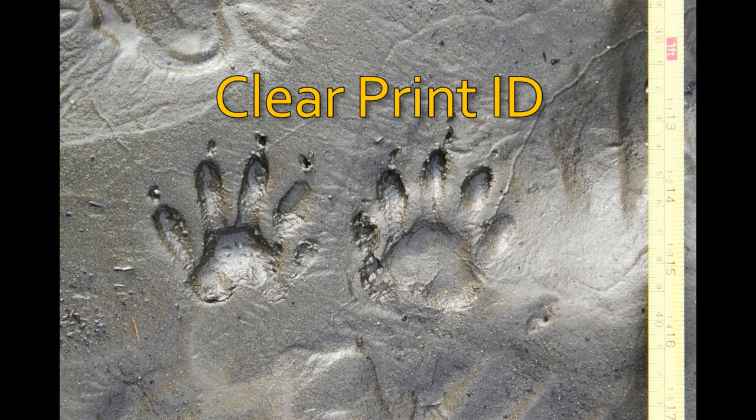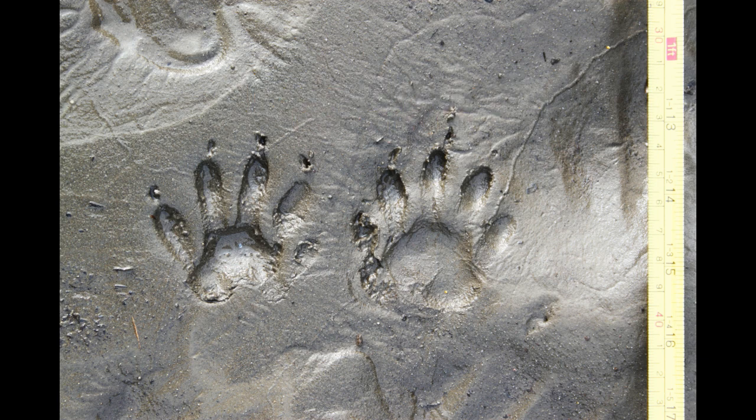Now we're on to the next step which is clear print identification — looking at the clearest, most well-defined tracks you can find and examining all their features to identify the maker of those tracks. In this case we can see two tracks both with five toes, kind of longer heels, and elongated toe pads. We're looking at the shape and number of toes, the presence or absence of claws, the overall shape of the entire foot, its width and its length. I'd definitely recommend recording the measurements if you can. Also look at any distinct patterns of pads in the feet, or lack of pads, as well as the space between the toes and the space between the toe pads and the main pad on the foot.